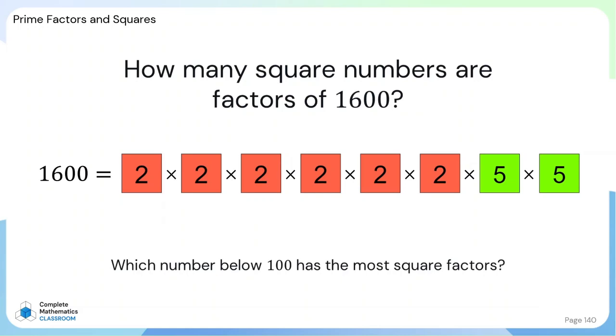Consider the factors of 1,600. How many of these factors are square numbers and how do you know? And as an extension, which number below 100 has the most square factors?